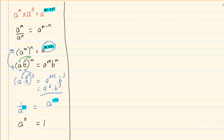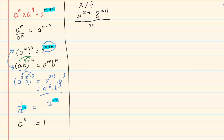Being comfortable with these rules, you need to recognize the styles they will ask. The first style is where you only have multiplication and division in the question. Take for example: 4 to the power of (x minus 1), times 8 to the power of (x plus 1), all over 32 to the power of (x minus 1).